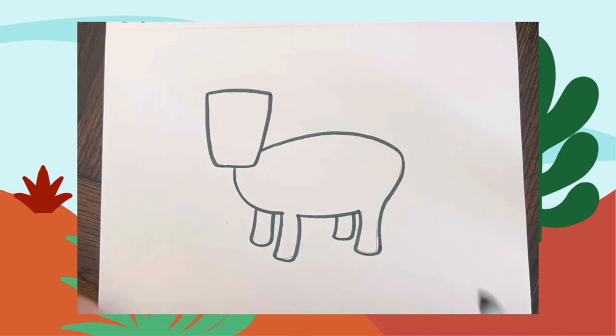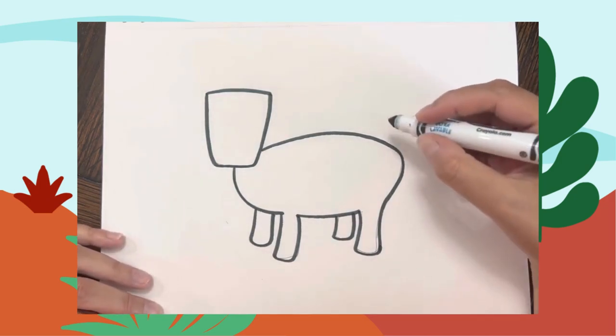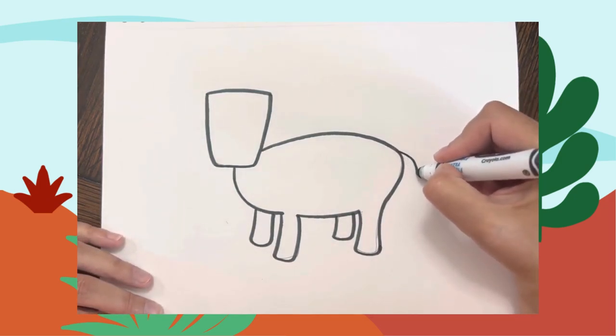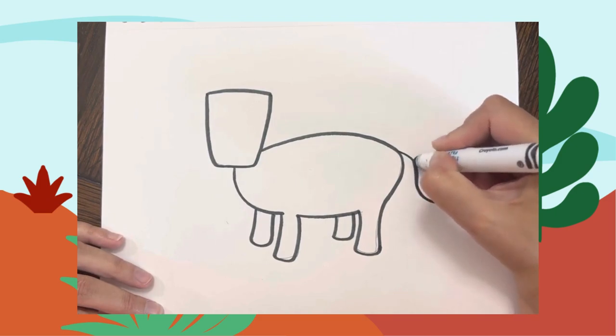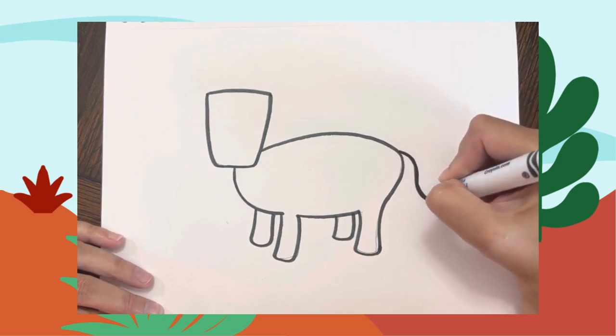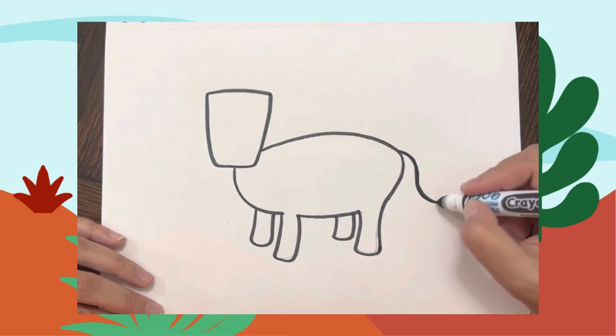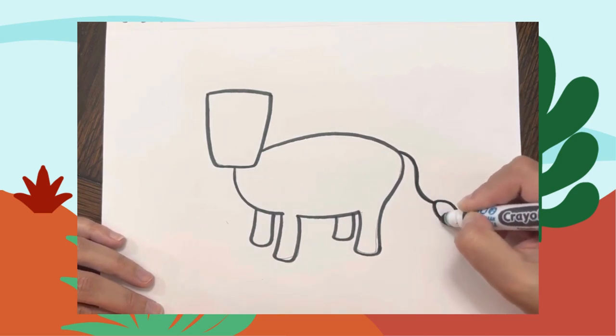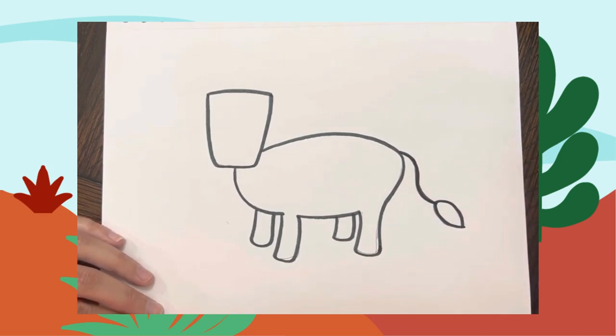So at the back of his body, we're going to make a curved line, kind of like a backward S shape. And I'm going to thicken that line out just a little bit. And then we're going to make a curved line to a point on both sides for the little hair at the end of his tail.